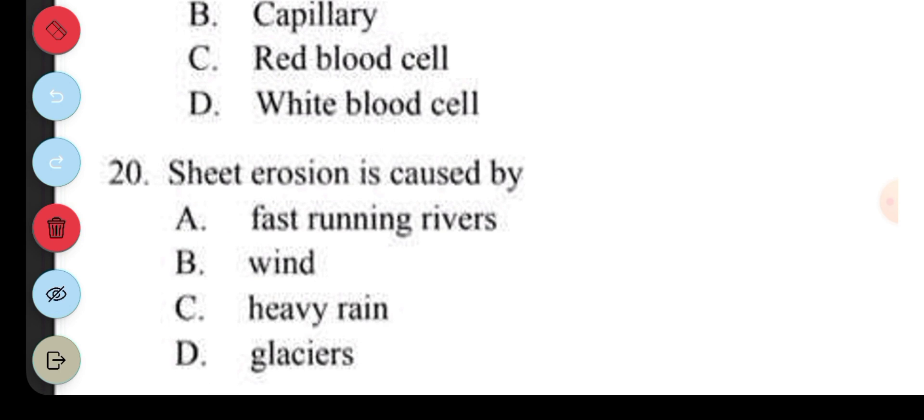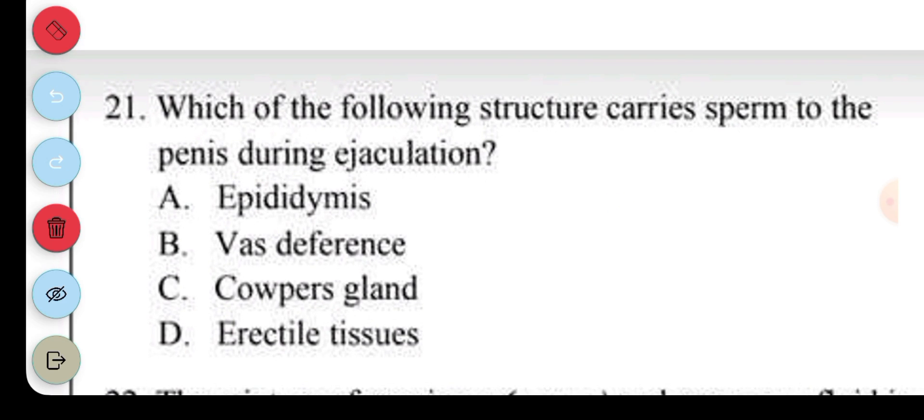Question 20. Sheet erosion is caused by: A. Fast running rivers. B. Wind. C. Heavy rain. D. Glaciers. The answer to question 20 is C, heavy rain. Question 21. Which of the following structures carries sperm to the penis during ejaculation? A. Epididymis. B. Vas deferens. C. Cowper's gland. D. Erectile tissues. The answer to question 21 is B, vas deferens.